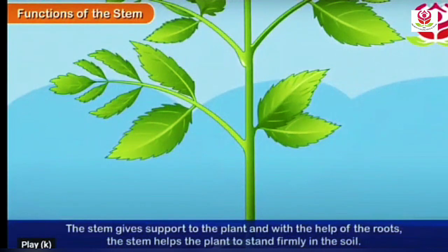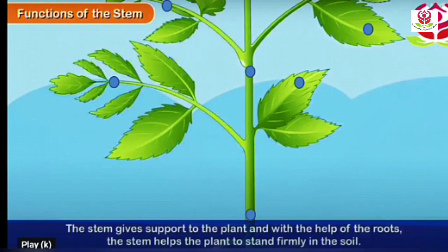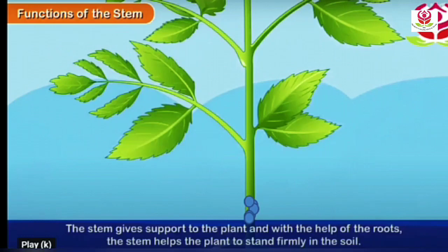Let's learn the functions of the stem. The stem gives support to the plant, and with the help of the roots, the stem helps the plant to stand firmly in the soil. If you see these blue dots on the diagram, they show that the stem carries food prepared in the leaves to all other parts of the plant. It also carries water and other useful substances from the roots to other parts of the plant.